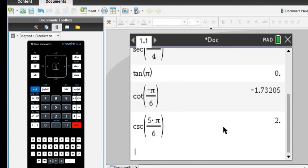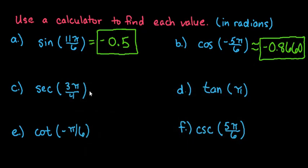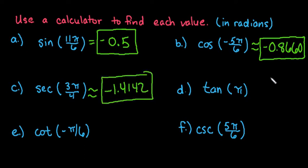For this one, all I wanted to do was show you how to plug in each of the six trig functions into your calculator and find the answer. I'm going to go ahead and go back and finish writing down the answers. Secant was negative 1.4142 approximately. Tangent π was equal to 0. Cosecant 5π over 6 is 2. And cotangent negative π over 6 rounded to negative 1.7321.